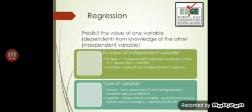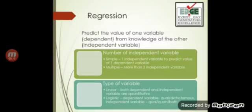Considering the difficulty levels of examinations like INICET, public health dentistry questions were considerably difficult. So also brush up on regression. Regression is a method that helps predict the value of one variable — a dependent variable — from the knowledge of other independent variables. This regression can be classified based on the number of independent variables; simple regression involves one independent variable.